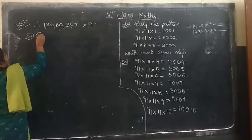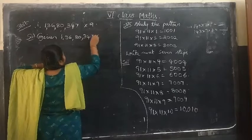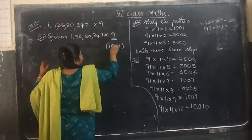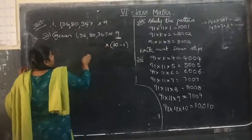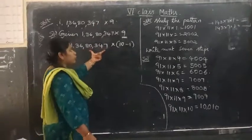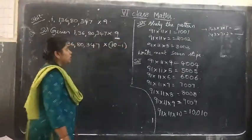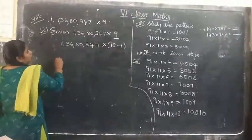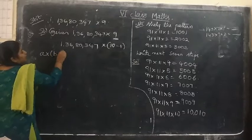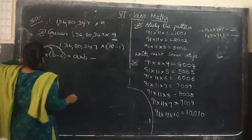Not normal multiplication — multiply by using the properties. We already know all the properties. So I am writing 9 in the form of 10 minus 1. Now this is in the form of distributive property under multiplication over subtraction. The distributive property is: A × (B − C) = A × B − A × C.